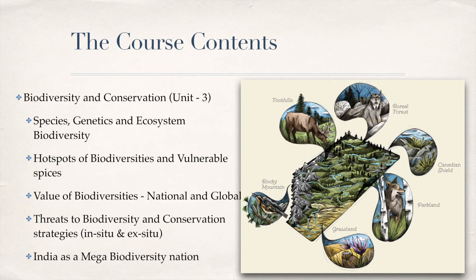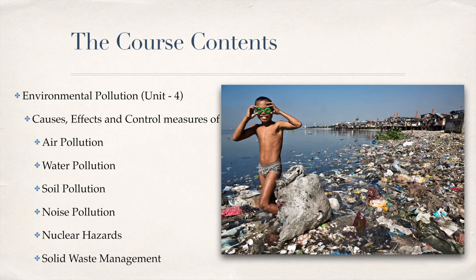Unit 3 covers biodiversity and conservation, including species, genetics, and ecosystem biodiversity, values of biodiversity, threats, and conservation strategies, with India highlighted as a mega-biodiverse nation. Unit 4 covers environmental pollution — causes, effects, and control measures of all kinds of pollution including air pollution, water pollution, soil pollution, noise pollution, nuclear hazards, and solid waste management.